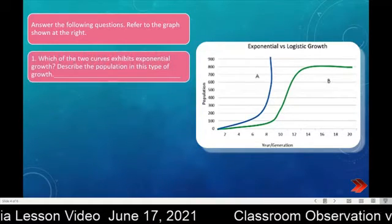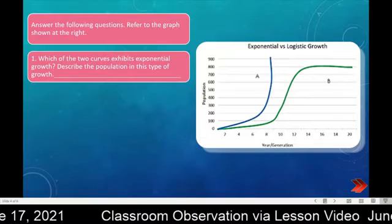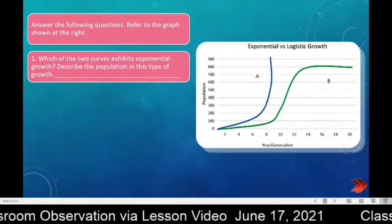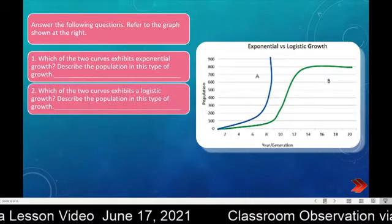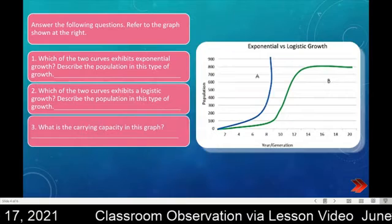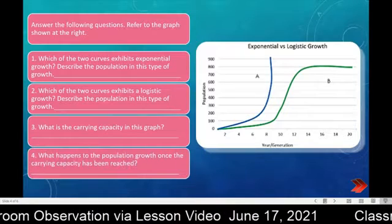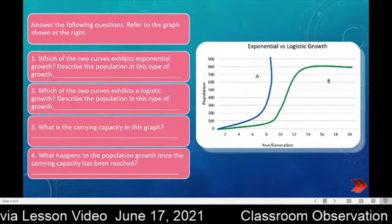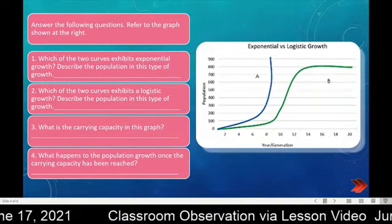Number one: which of the two curves exhibits exponential growth? Describe the population in this type of growth. Number two: which of the two curves exhibits logistic growth? Describe the population in this type of growth. Number three: what is the carrying capacity in this graph? And number four: what happens to the population growth once the carrying capacity has been reached? Write all your answers on your notebook or any sheet of paper.